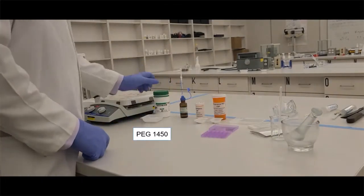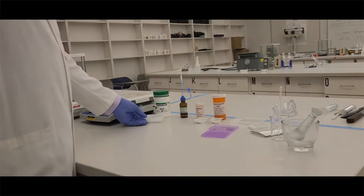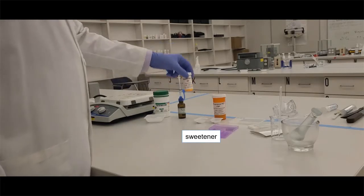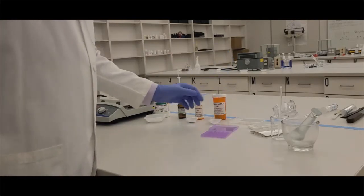The ingredients we're going to be using is the PEG-1450 as our troche base that will dissolve in the mouth. It's a very flaky, waxy substance. We have our flavoring agent that's liquid. We're going to use a sweetener, in our case aspartame, and our drug is going to be pilocarpine.